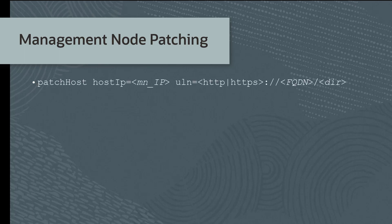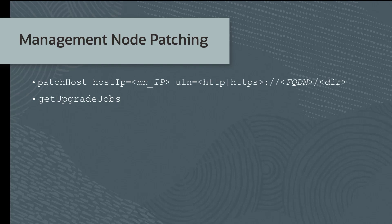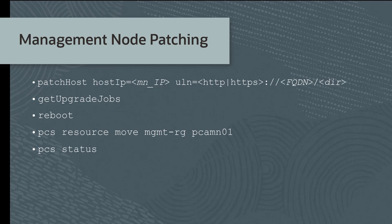From the service CLI, run the patch host command for management node 2. Run the get upgrade jobs command to ensure the patch result is passed. Here I'm showing the output of this command and the result is passed. Then exit the service CLI and log into management node 2 and reboot it. You next need to move the cluster virtual IP to one of the patched management nodes. Use the PCS resource command as shown. This example moves the virtual IP to management node 1. You can then optionally run the PCS status command to ensure the previous command was successful.